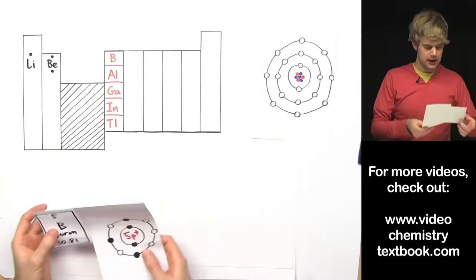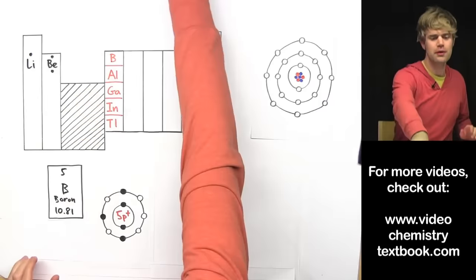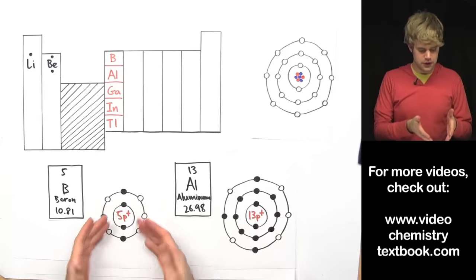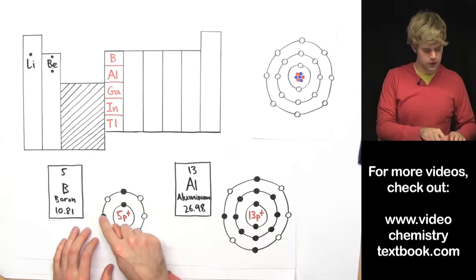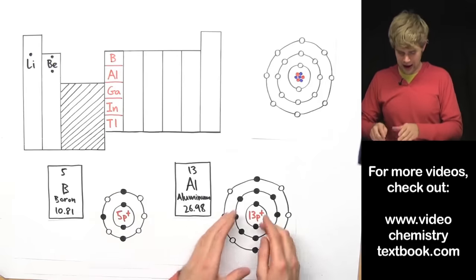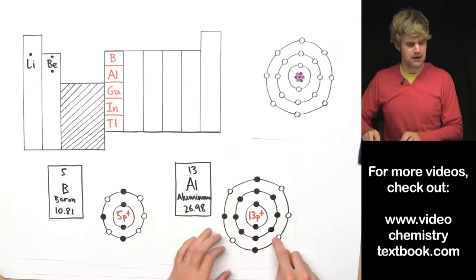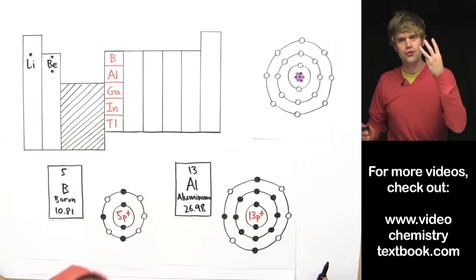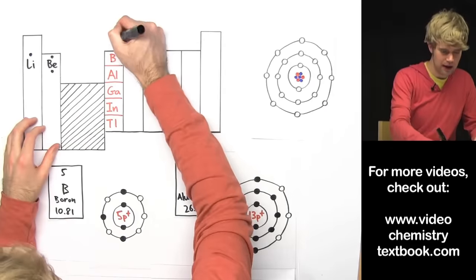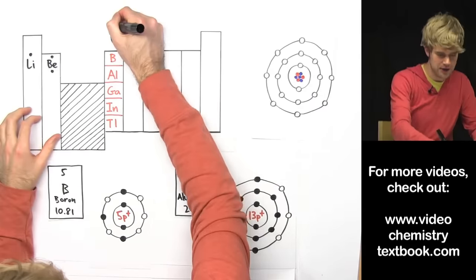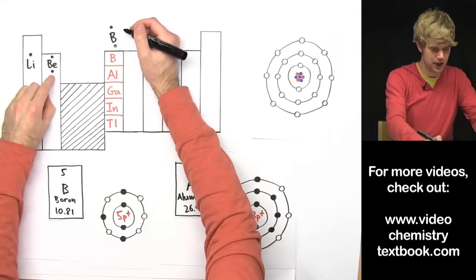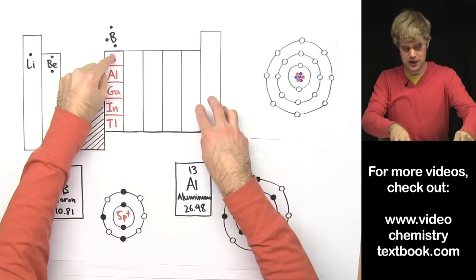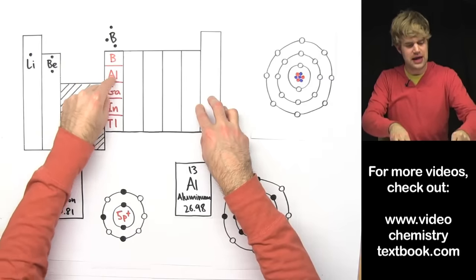Moving on to boron — five protons — and aluminum with thirteen protons. Looking at the valence electrons: boron has one, two, three in its valence shell, and aluminum also has one, two, three in its valence shell. The same is true for all the other elements in this column even though I haven't drawn them out. If you're in this column you have three valence electrons. For boron's dot diagram: dot on the top, dot on the bottom, and a dot to the left.